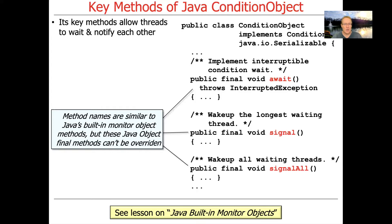The ones that are part of the condition object are await, signal, and signalAll. The reason why they had to come up with different names is that the methods defined in Java Object — wait, notify, and notifyAll — are defined as final and therefore cannot be overridden by subclasses. So they couldn't reuse those names in the implementation of the condition object.